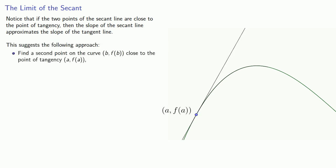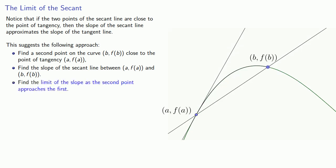First, we'll find a second point on the curve, (b, f(b)), that's close to the point of tangency (a, f(a)). Then we'll find the slope of the secant line between (a, f(a)) and (b, f(b)). And finally, we'll take the limit of the slope as the second point approaches the first.